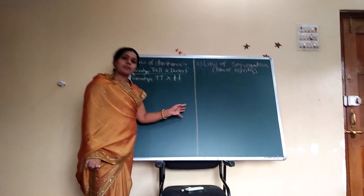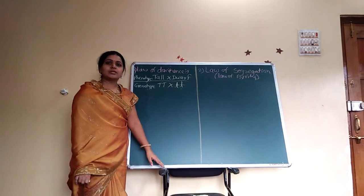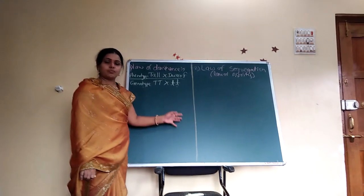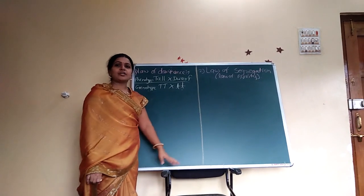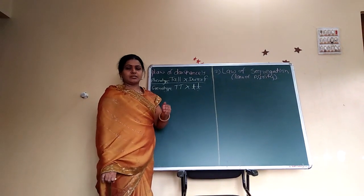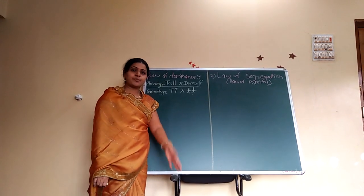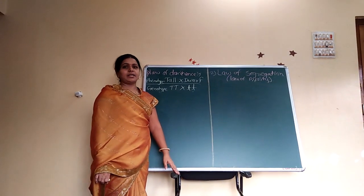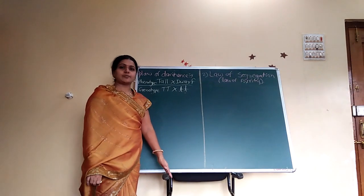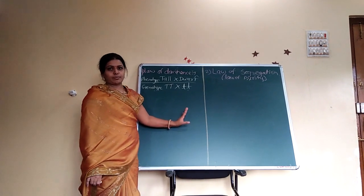The law of dominance means: when two pure parents or two homozygous parents are crossed with one or more sets of contrasting characters, in F1 generation those alleles that appear or express are called dominant, and those that do not appear or not express are called recessive. This is called the law of dominance.